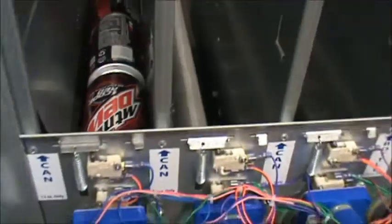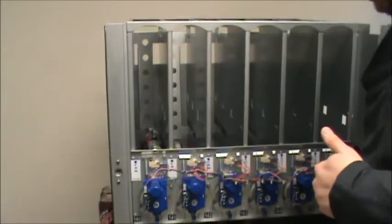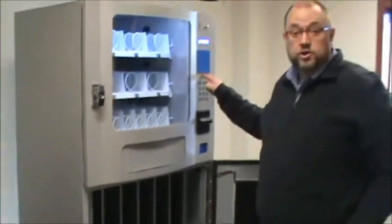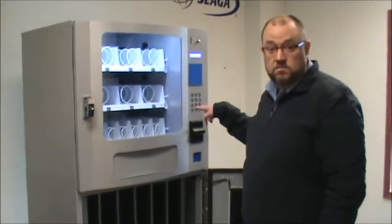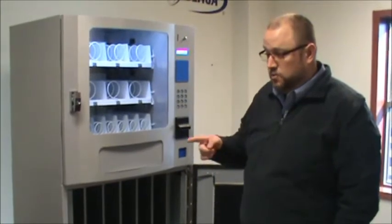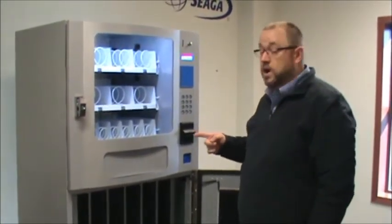Once you have your products properly loaded, you're going to want to do some test vends to make sure that they draw properly. To do that, you press the blue service menu button on your control board, select the number 8, and then press any selection you want to turn, and you can run your test vends and make adjustments from there to make sure that they vend properly.